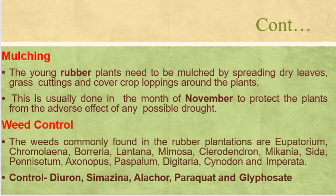Regarding mulching and weed control: in young rubber trees, the plants need to be mulched by spreading dry leaves, grass cuttings, and cover crop loppings around the plants. This is usually done in November to protect the plants from any possible drought. The weeds commonly found in rubber plantations are Eupatorium, Chromolaena, Boreria, Lantana, Mimosa, etc. Control measures include application of diuron, simazine, alachlor, paraquat, and glyphosate.